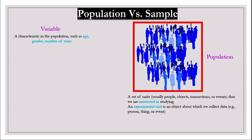In studying a population, we focus on one or more characteristics or properties of the units in the population. We call such characteristics variables. For example, we may be interested in the variables age, gender, and number of years of education.